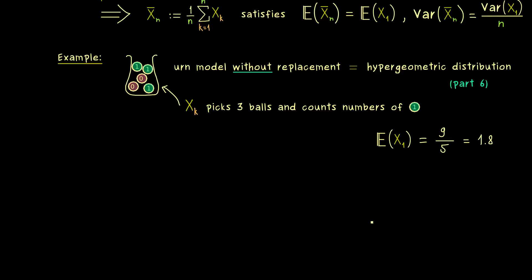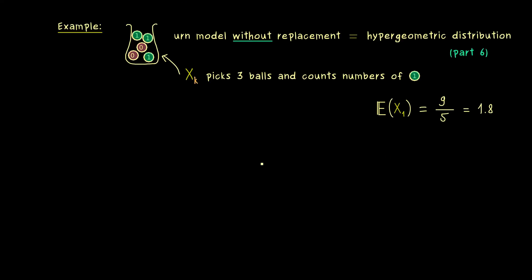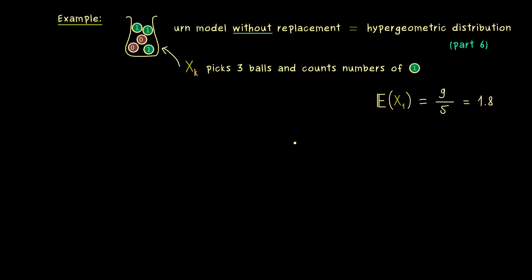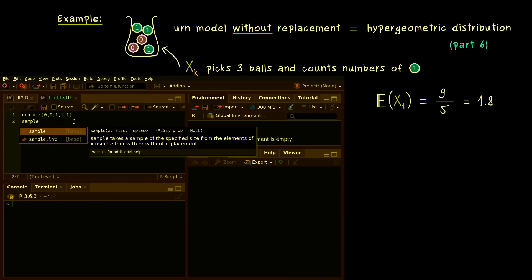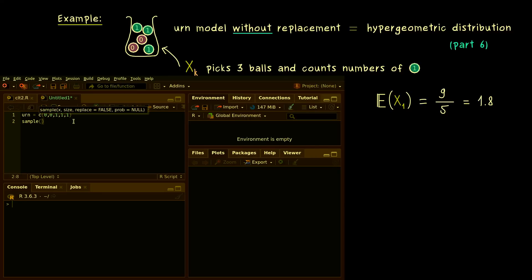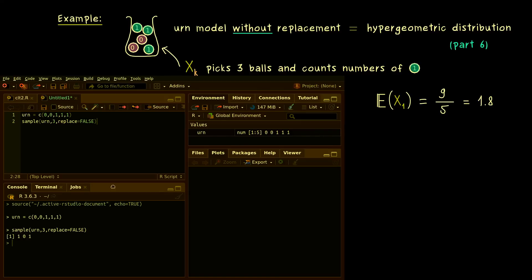Ok, and now to get an idea of the important central limit theorem, I would say we can simulate this urn model in R. So the first thing is that we can put in the urn as a vector with five components. And now one sample of the random variable can simply be simulated with the sample command. So we have urn, 3 and the replacement should be false. So there you see, this is our pick. We have the number 1, 0 and 1. But now please remember, we want to count the number of the balls with 1.